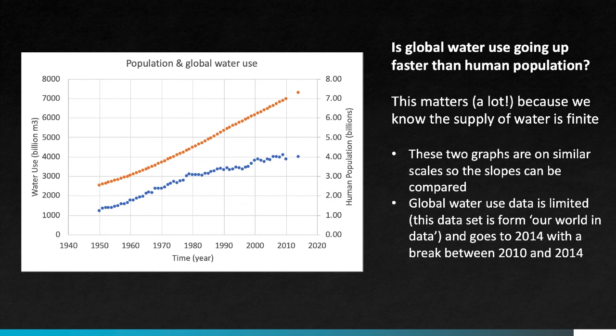Since those are on the same scale, we can look at the slopes, which look pretty similar up to about 1980. After that, the slope changes for water use, and it actually looks like we're not increasing water use as fast as we're increasing population.